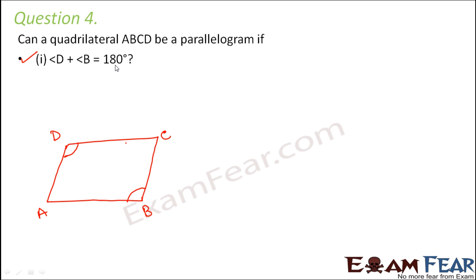Another property of a parallelogram is that the sum of adjacent angles equals 180 degrees. Nothing of that sort has been stated in this question. So looking at only this criterion, ABCD may or may not be a parallelogram. Had the sum of adjacent angles been 180 degrees, it would have satisfied a property of a parallelogram and enhanced the chances.